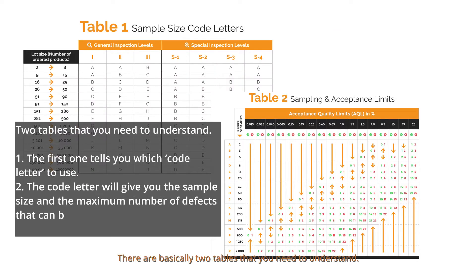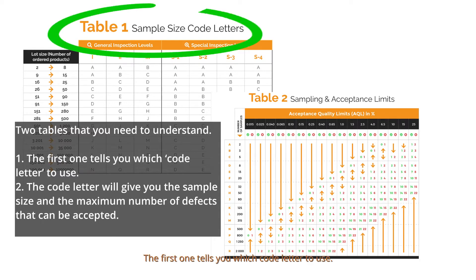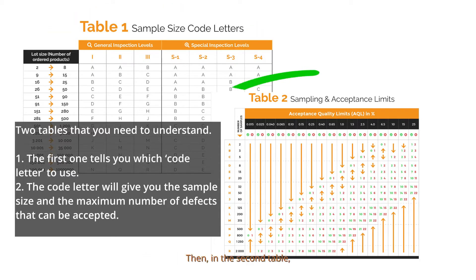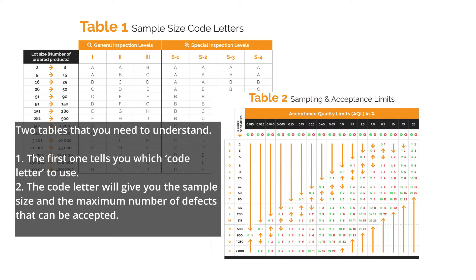There are basically two tables that you need to understand. The first one tells you which code letter to use. Then in the second table, the code letter will give you the sample size and the maximum number of defects that can be accepted. Now we are going to go through these two tables step by step.